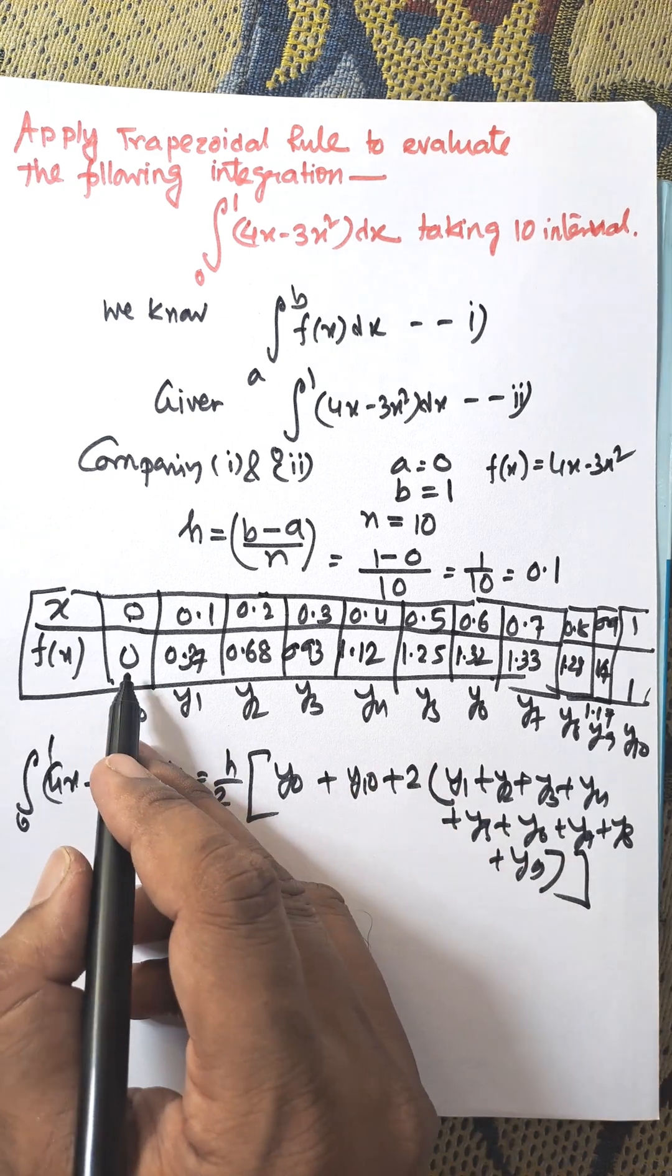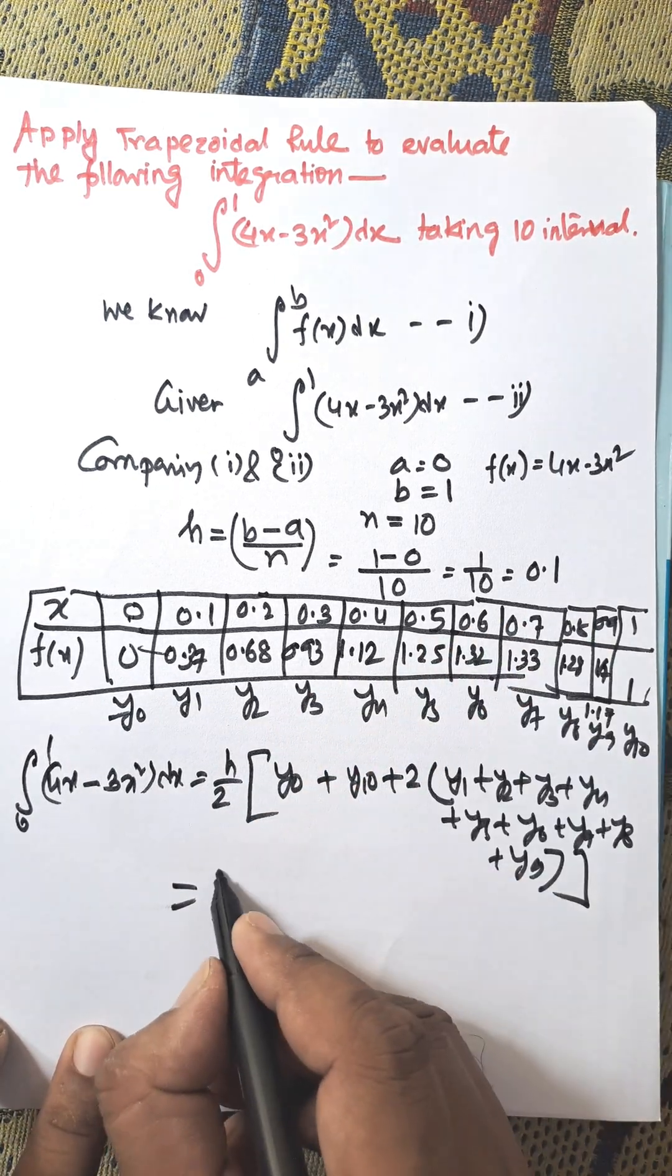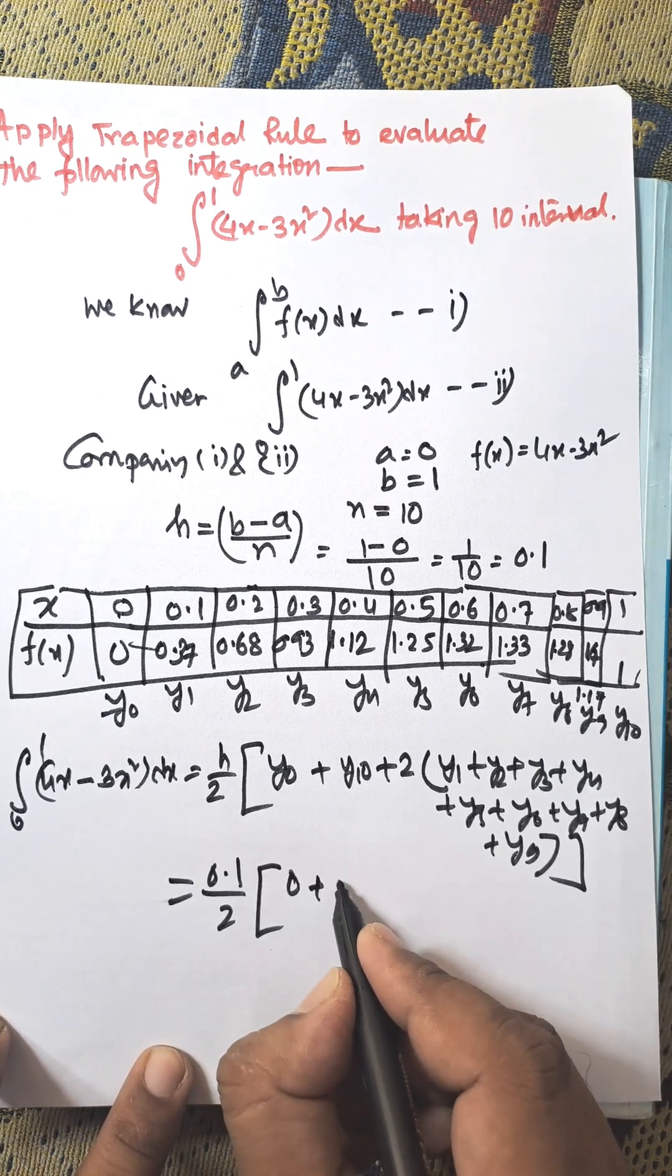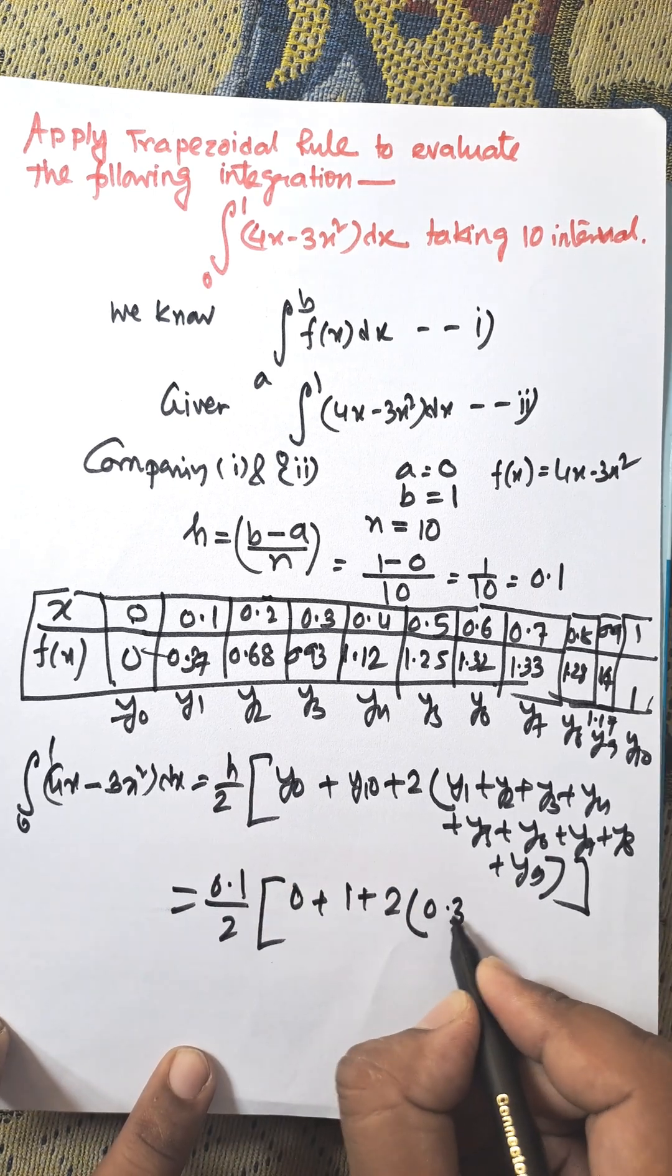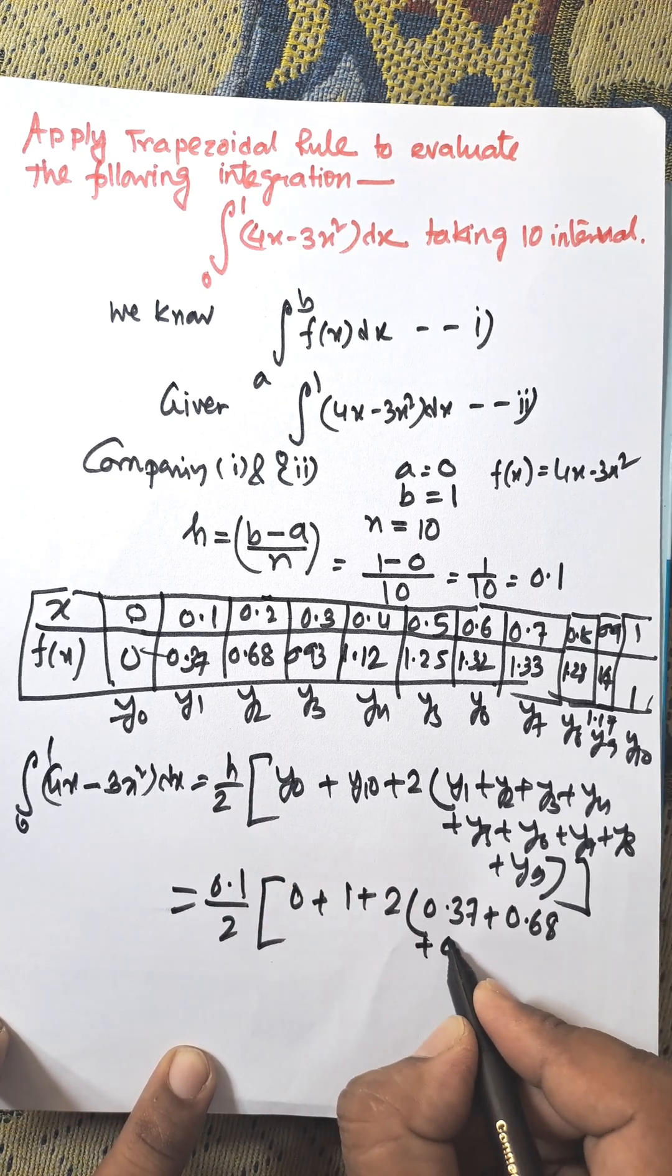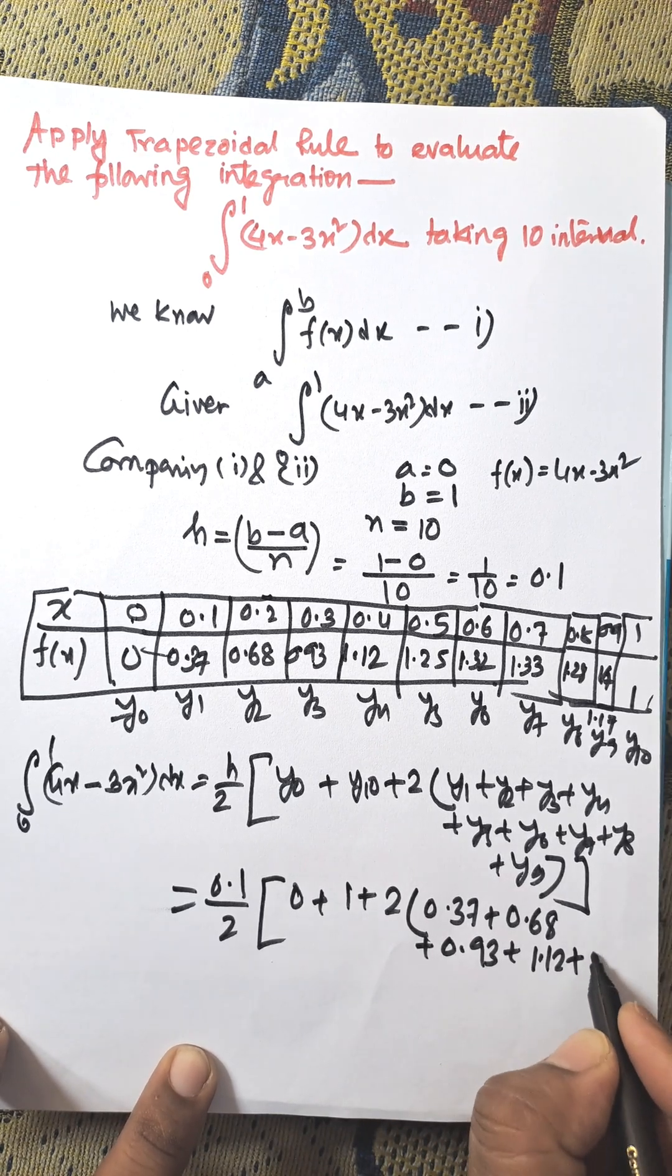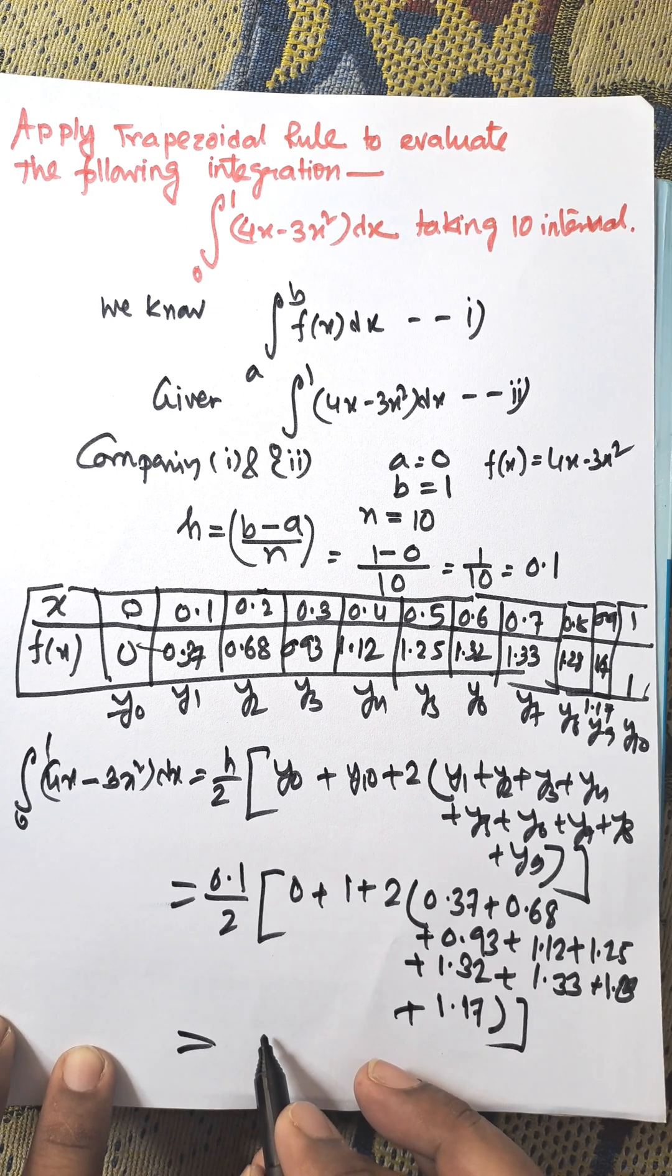Putting the values of y₀, y₁, up to y₁₀, we get: h is 0.1, so 0.1/2 times [0 + 1 + 2(0.37 + 0.68 + 0.93 + 1.12 + 1.25...)]. Calculate this value using a calculator to get the answer.